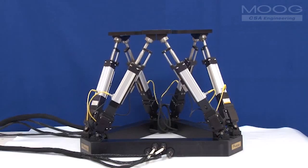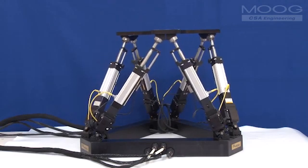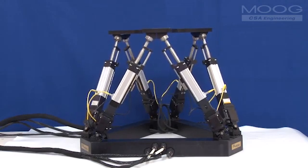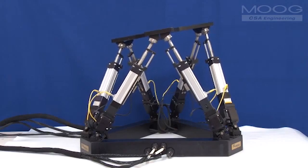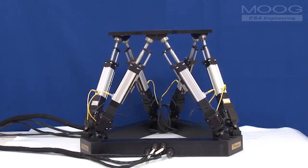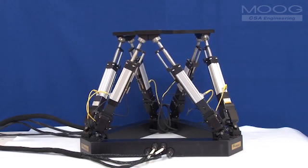A hexapod consists of six struts arranged in parallel along with a moving platform and usually a fixed base. Each strut includes an actuator, one or more sensors, and a joint at each end to allow the appropriate kinematic freedom.